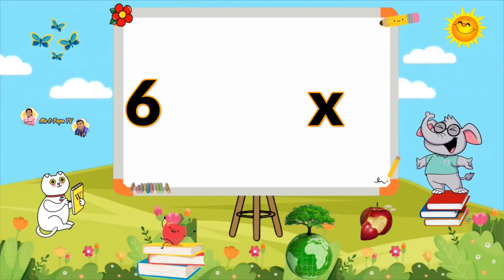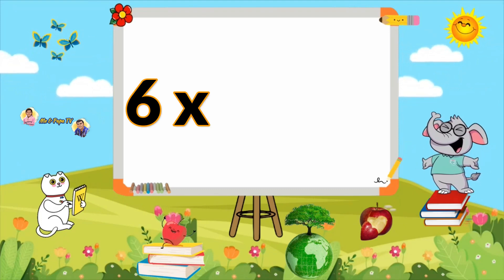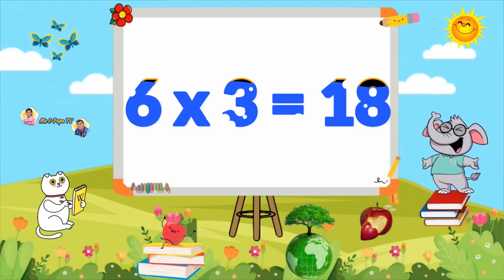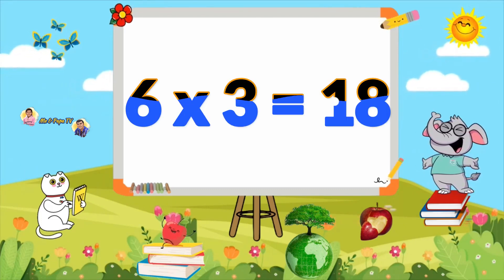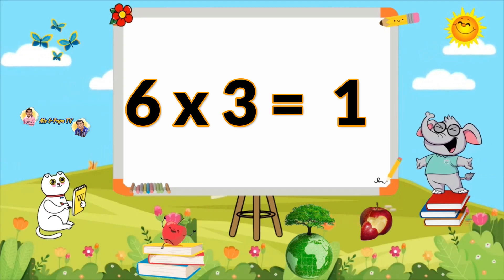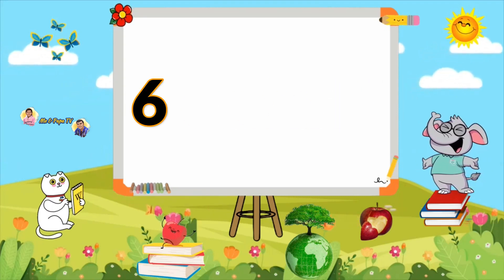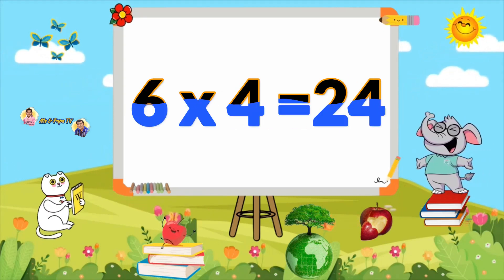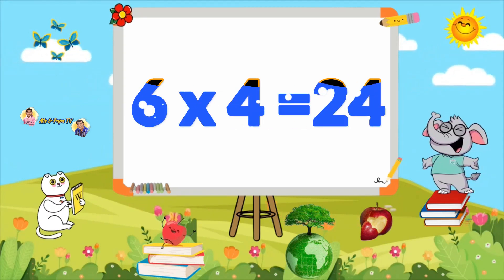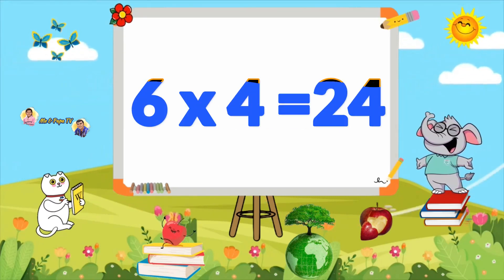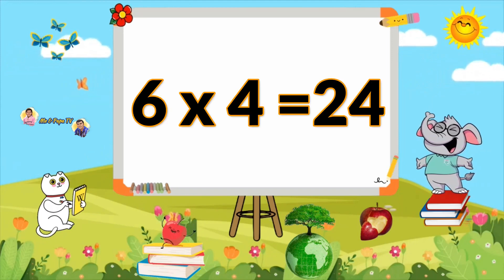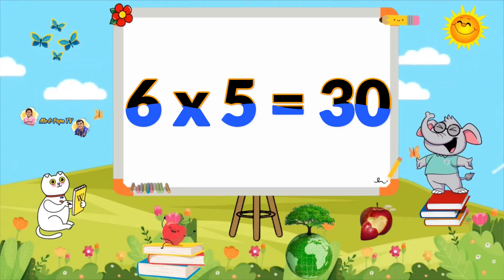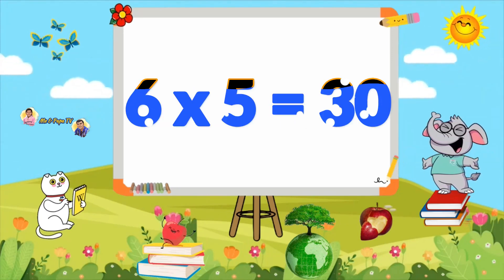Six threes are eighteen. Six fours are twenty-four. Six fives are thirty.